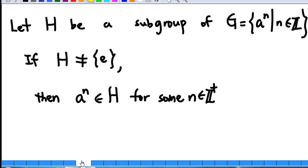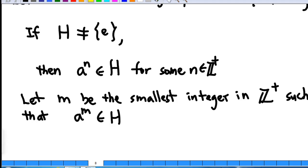If H is not the set containing e alone, then I must be able to find some positive integer n such that a power n belongs to H. Now, we let m be the smallest positive integer such that a power m belongs to H. This is a crucial step because we make use of this in our conclusion later on.